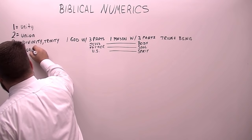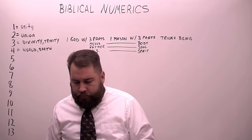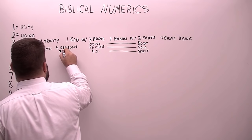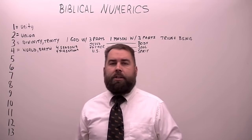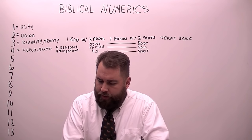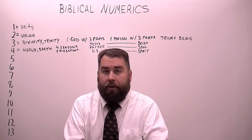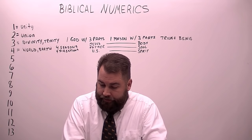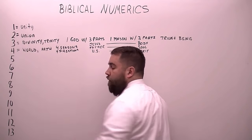What's the number four? Four is the number of the world, or maybe we could say of earth. In the Bible, four is an interesting number. There are four seasons and four directions: north, south, east, and west. The angels in Revelation stand on the four corners of the earth. There are actually four elements: earth, wind, fire, and air. There were four rivers that flowed out of the Garden of Eden, and four cherubims. So four lines up with the world and the earth.